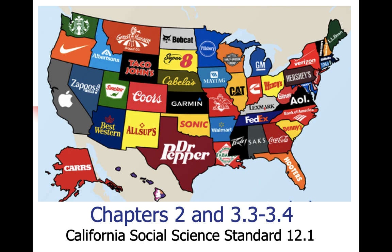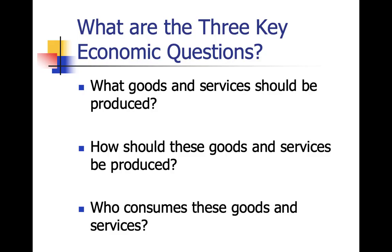In a mixed, more capitalist system, there are more options — you can decide between Dr Pepper and Coca-Cola. These companies make decisions because of their own self-interest, looking out for profit, and that profit is made by creating appealing products for people to purchase. That's how a mixed economy works, as opposed to a communist nation like North Korea where none of this exists.